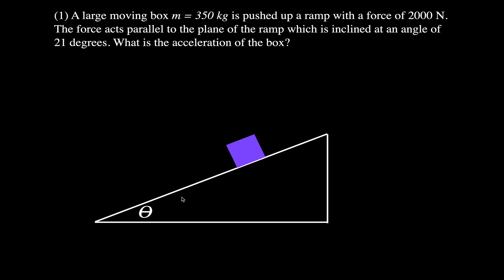We're going to be doing two separate example problems — the first one without friction, the second one with friction. Problem number one says we have a large moving box with a mass of 350 kilograms, pushed up a ramp with a force of 2,000 newtons acting parallel to the plane. The ramp makes an angle of 21 degrees with the horizontal, and we want to know the acceleration of the box. There is no friction between the box and the inclined plane.